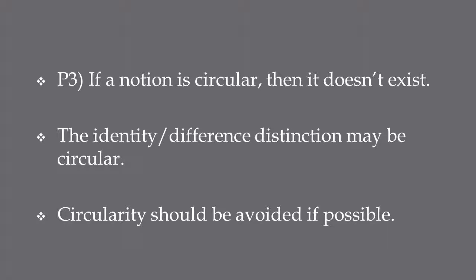Before considering the first two premises, let's look at Premise 3. One might doubt whether circularity entails non-existence. Consider the notion of identity: we might say that two things are identical if they are not different, and that they are different if they are not identical. So the notion of identity depends on the notion of difference, and the notion of difference depends on the notion of identity — making the identity-difference distinction circular. But we wouldn't deny that the distinction exists.